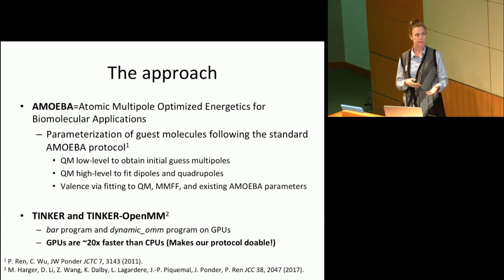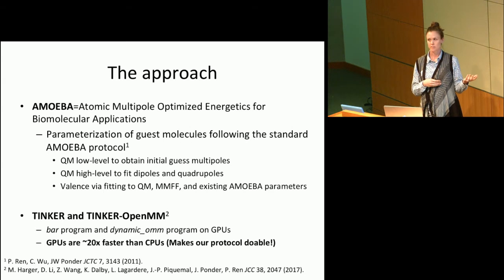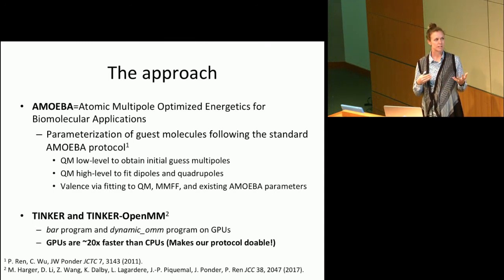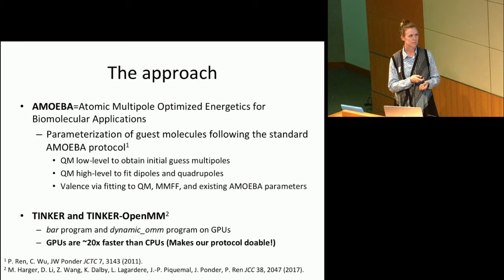Once we had our parameters in hand for the guest system, we moved forward to calculate our free energies. We utilized the DYNAMIC and BAR programs via Tinker-OpenMM, and all of these were run on GPUs. I really can't drive home enough how life-changing the utilization of GPUs is within our free energy calculations — just a few years ago we were running everything on CPUs. These calculations run about 20 times faster on the GPUs we have in-house now.